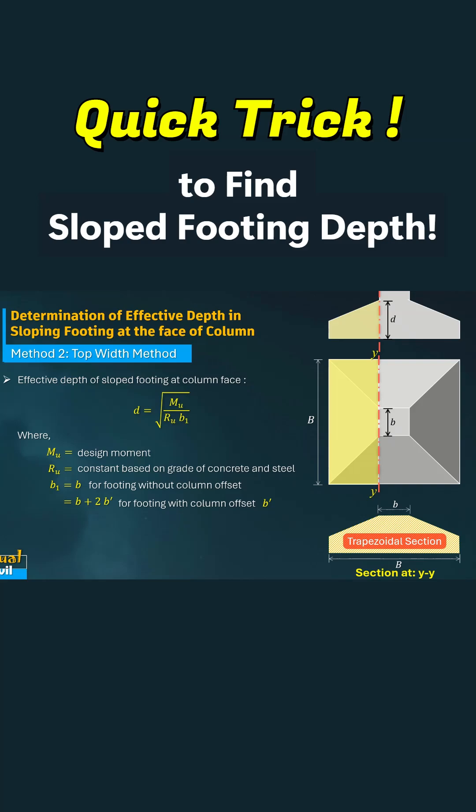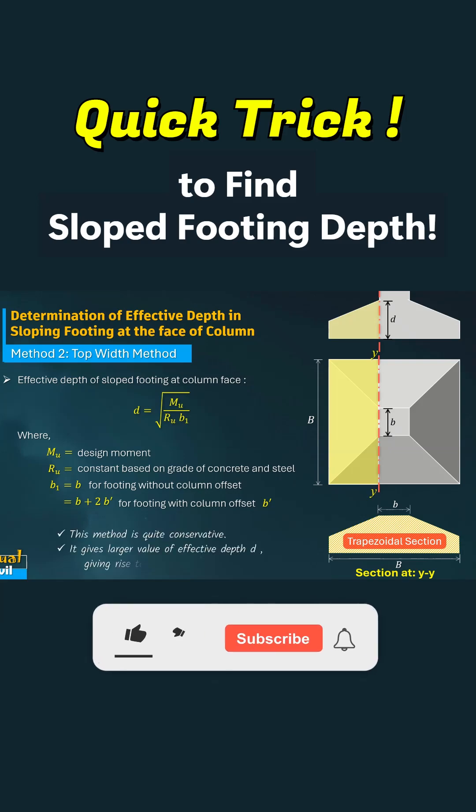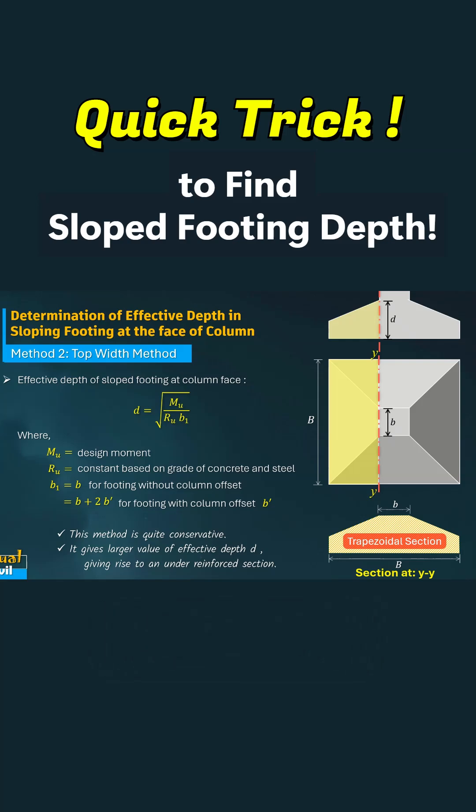This method is considered conservative, but that's actually a design advantage. It typically results in a larger effective depth D, which leads to an under-enforced section, a safer and more ductile structural choice.